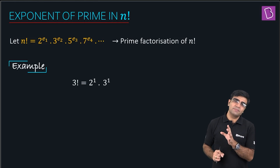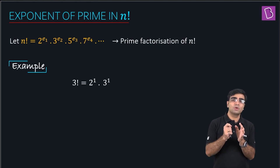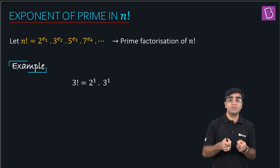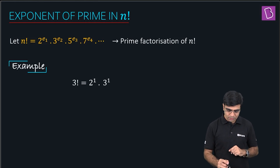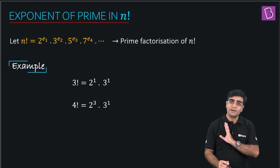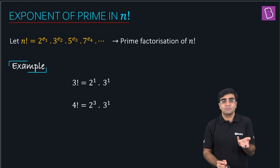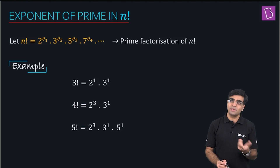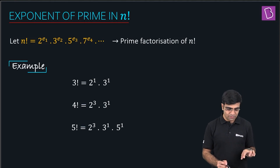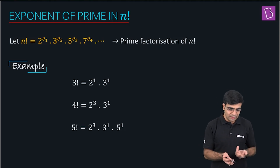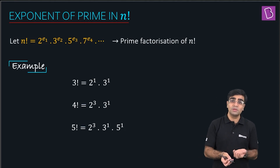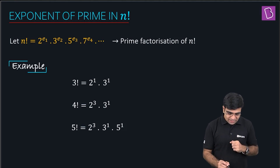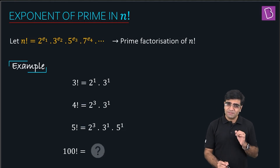Let me take some small examples. Factorial 3 is 2 × 3, so we write it as 2^1 · 3^1. Factorial 4 is 24, which is 2^3 · 3, so we get 2^3 · 3^1. Factorial 5 is 120, which is 2^3 · 3^1 · 5^1.